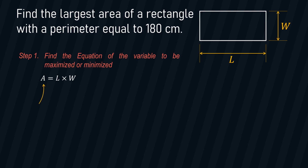In this equation, area is the dependent variable because its value depends on the values of L and W. L and W, on the other hand, are the independent variables. Remember, in step number one, our equation should contain only one independent variable. For our case, we have two — L and W — so what we have to do is express one variable in terms of the other. To do that, you just need to find the relationship between L and W, and most of the time, it has something to do with whatever is given in the problem.